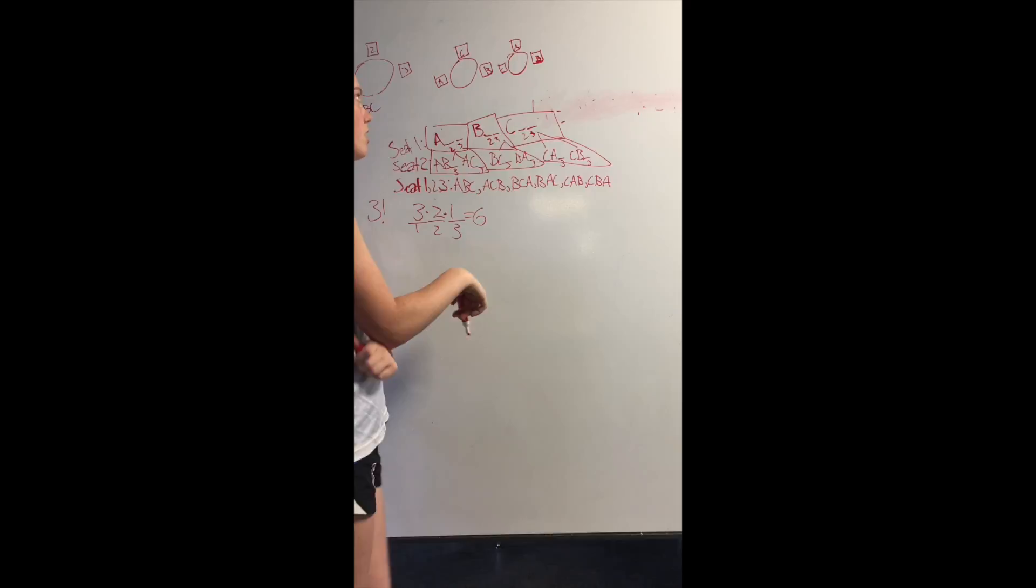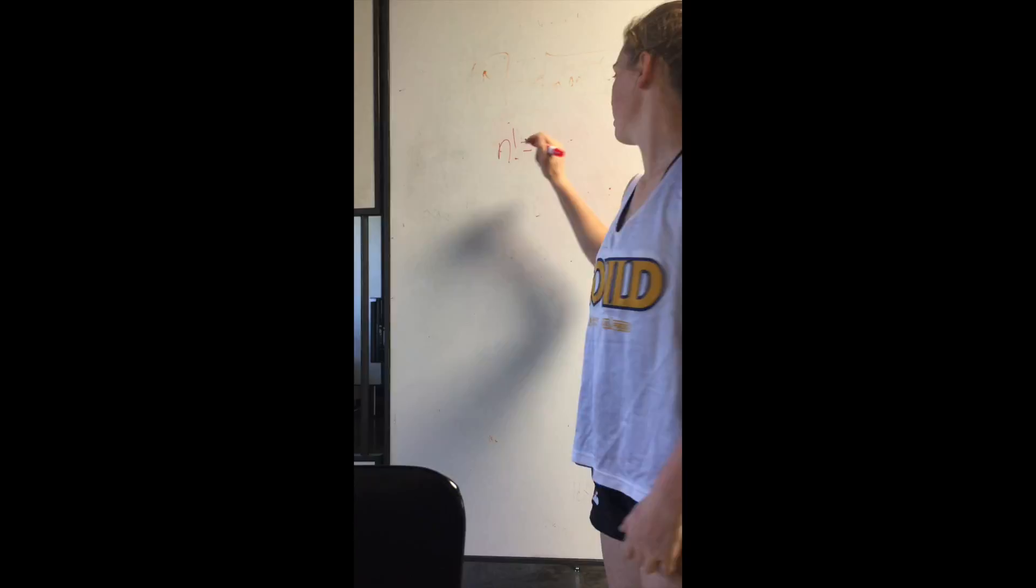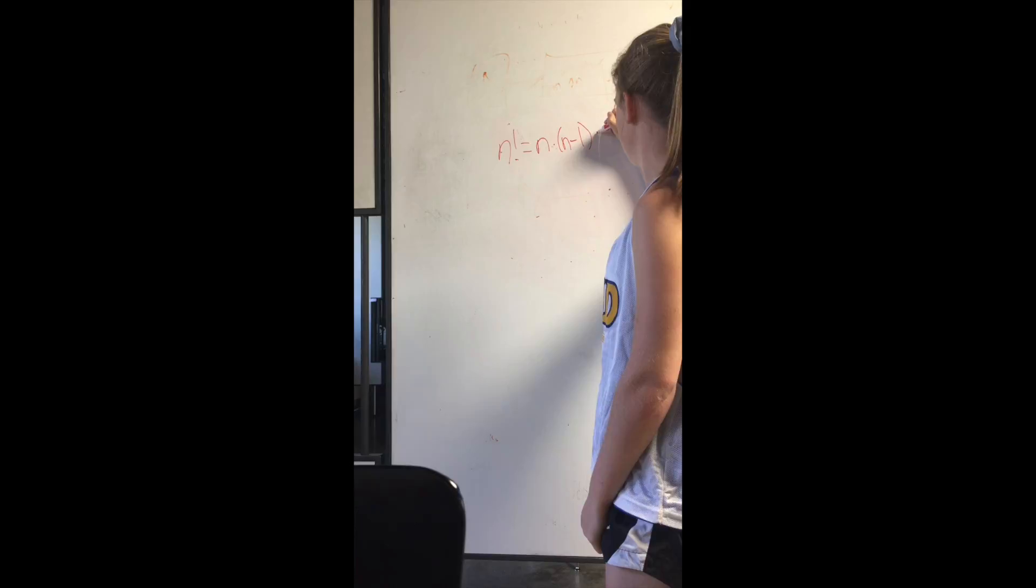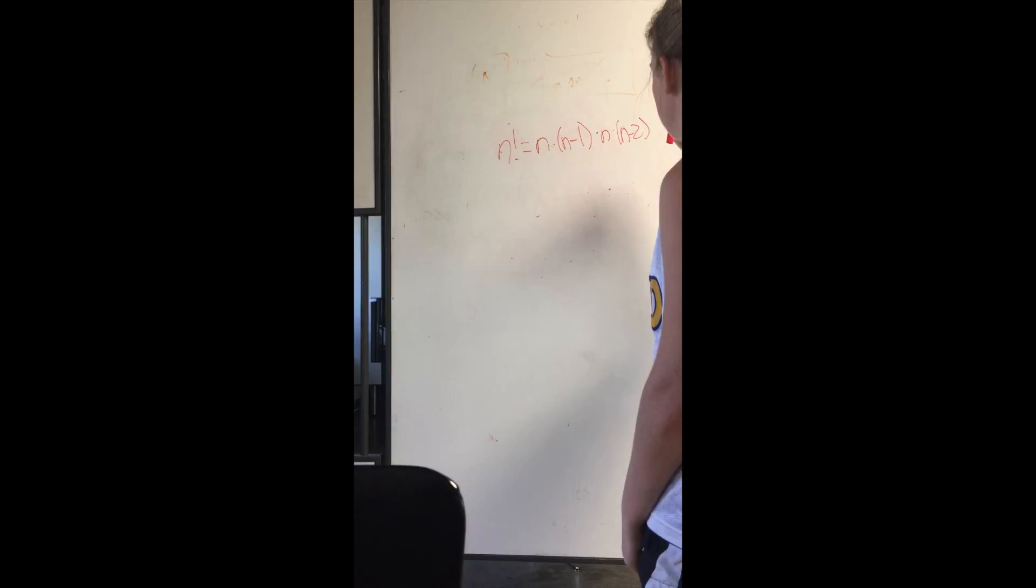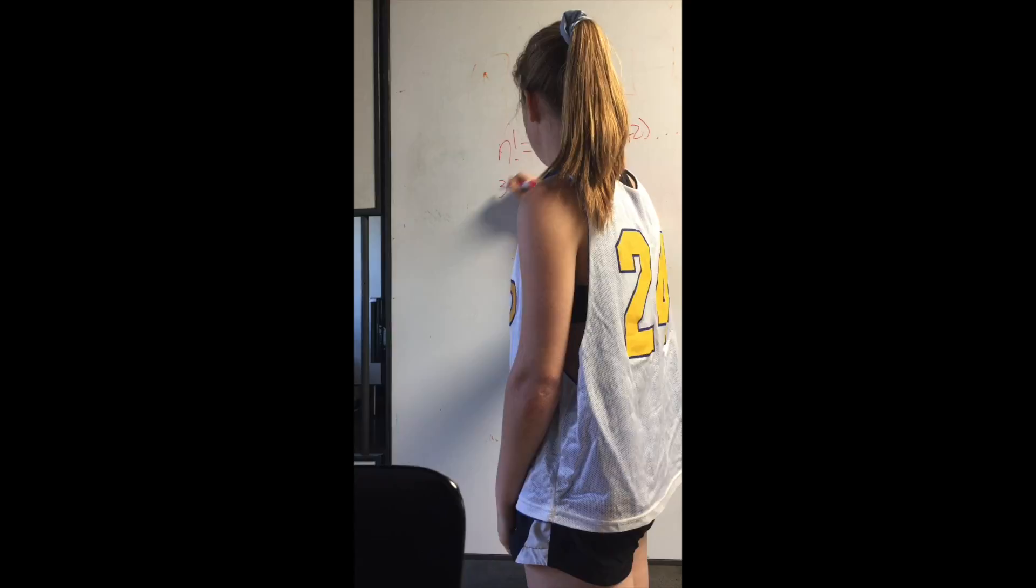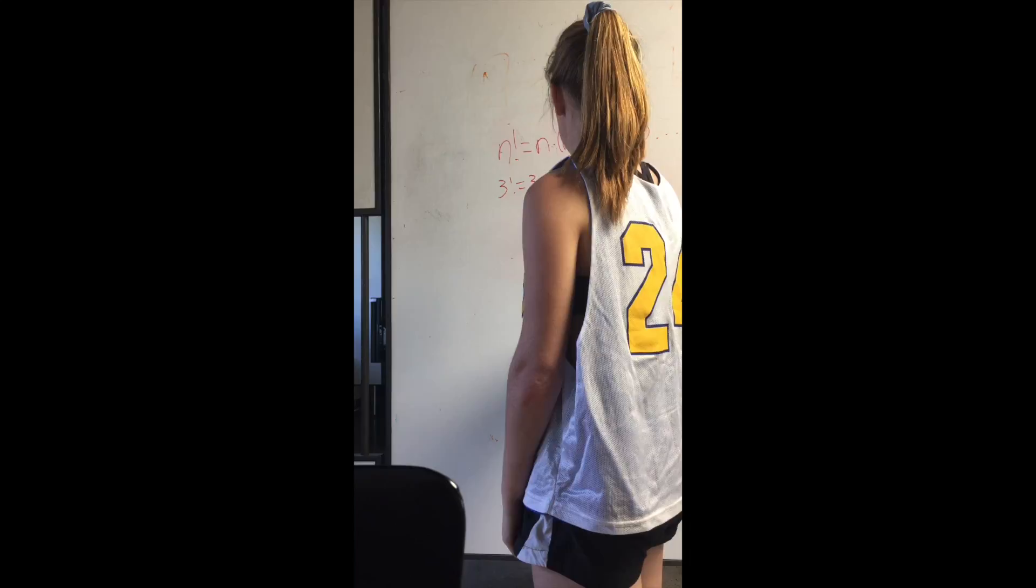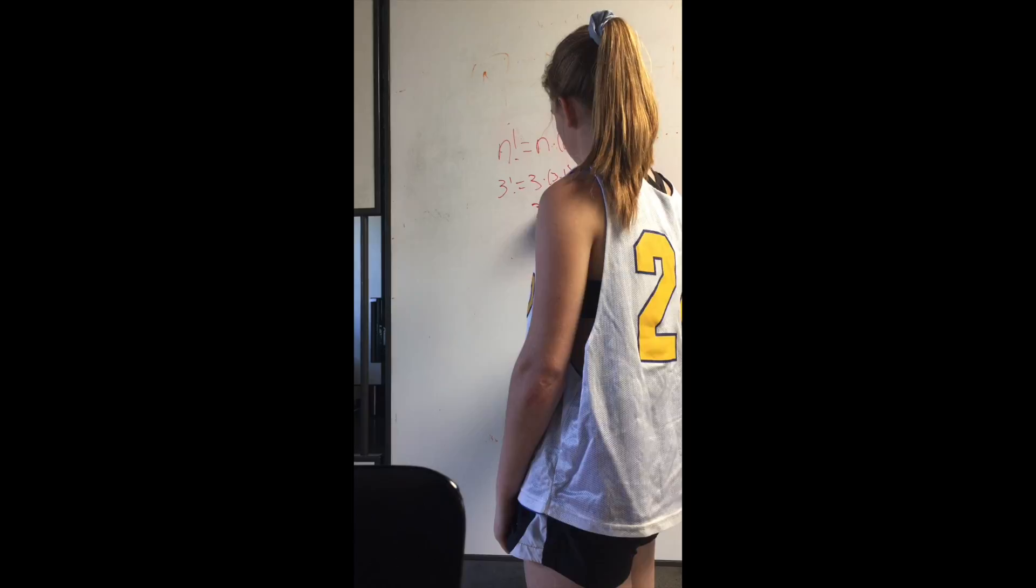The basic factorial formula is n factorial equals n times n minus 1 times n minus 2, and it would just keep going until you get to 1. So let's plug 3 over n. That would be 3 times 3 minus 1 and then 3 minus 2. So that would be 3, then 3 minus 1 is 2, and then 3 minus 2 is 1. That would be equal to 6. That's basically what you do.